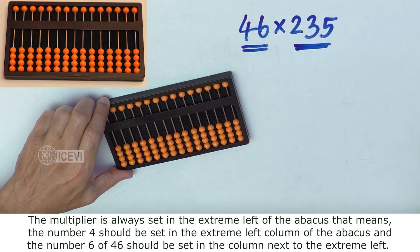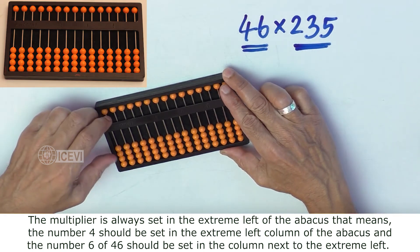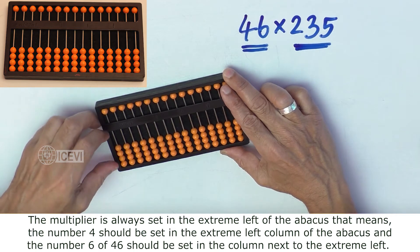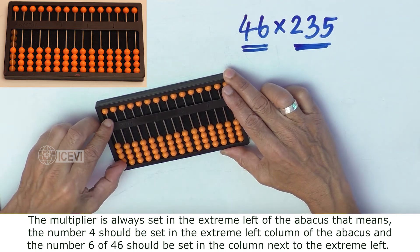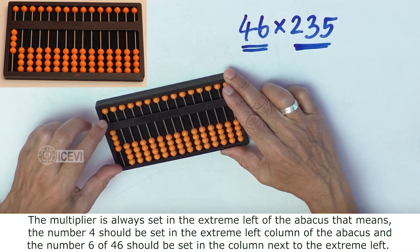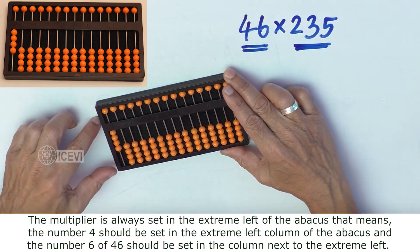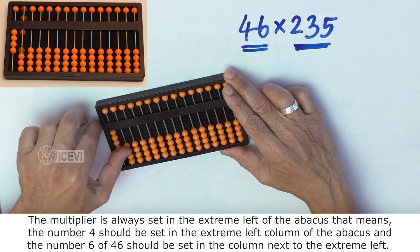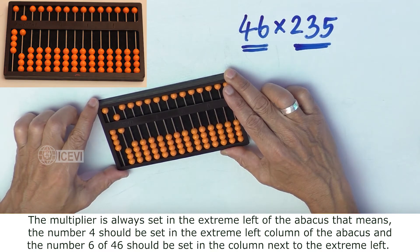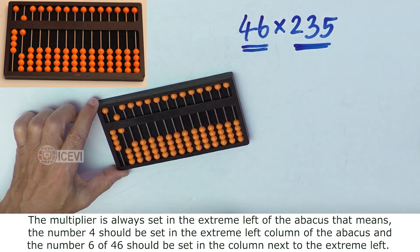Here 46 is the multiplier and 235 is the multiplicand. The multiplier is always set in the extreme left of the Abacus. That means 4 should be set in the extreme left column, and the 6 of 46 should be set in the column next to the extreme left.